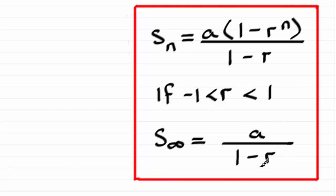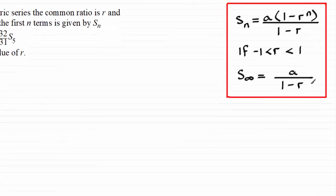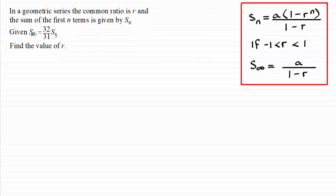That's providing the common ratio r lies between minus one and one. It's given by a over one minus r, and we can use these two formulae in this relationship here.